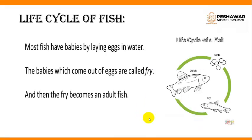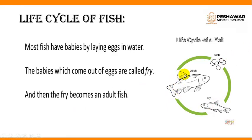In this chapter, we will discuss the life cycle of different animals. First, we will discuss the life cycle of fish — it is a simple life cycle. As you see in the diagram, most fish have babies by laying eggs in water. The babies which come out of the eggs are called fry, and then the fry becomes an adult fish. So eggs are converted into fry, and then fry changes into the adult fish.